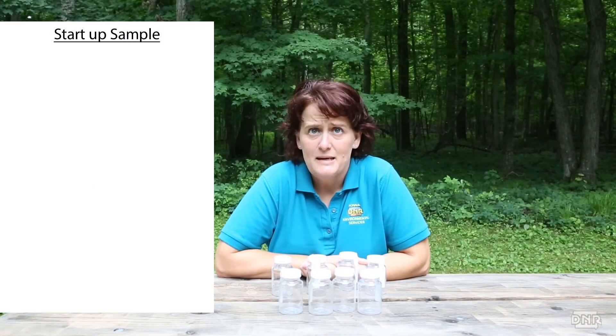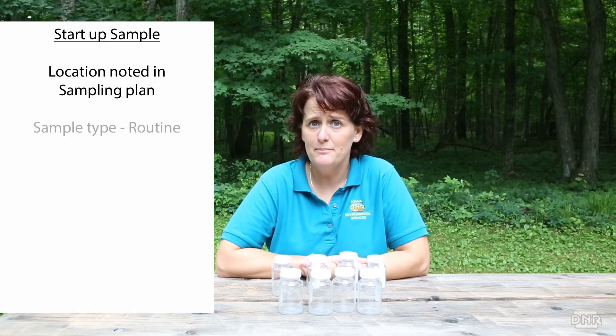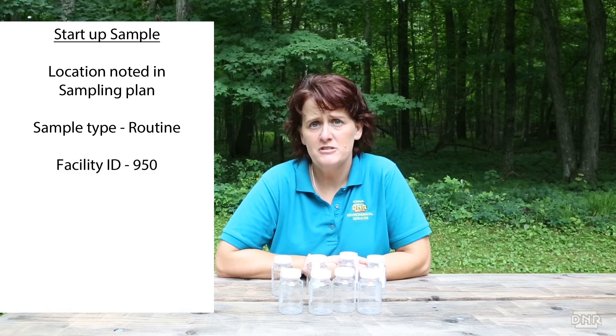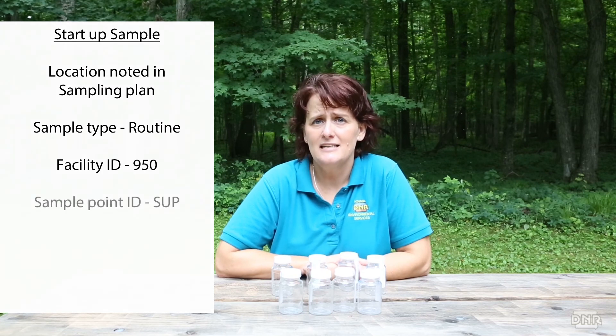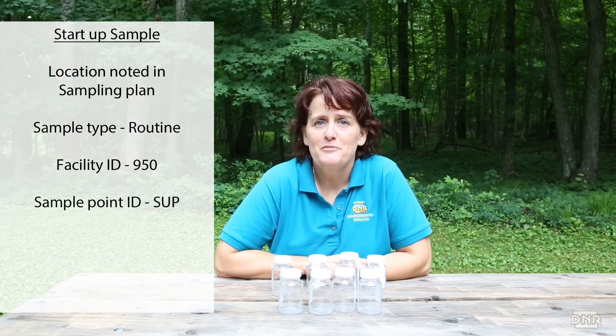Just give your favorite DNR rep a call if you have any questions about it counting or not. The startup sample should be taken at a location noted in your sampling plan and it must be labeled as sample type: routine; facility ID: 950 — if you have more than one distribution system, check your permit for the right numbers — and sample point ID: SUP, which stands for startup procedure. Well, that about wraps up this introduction to the revised Total Coliform Rule. Thanks for taking the time to watch the video, and hopefully I've answered some of your questions, but don't hesitate to give your favorite DNR rep a call. We are all here to help.